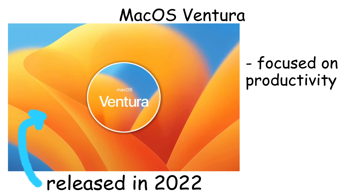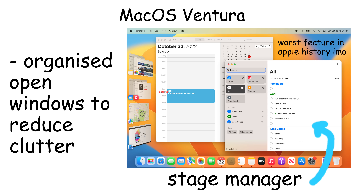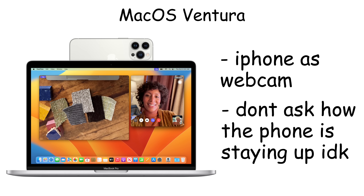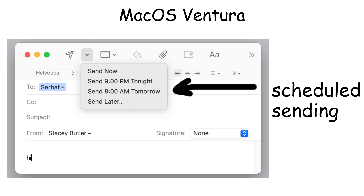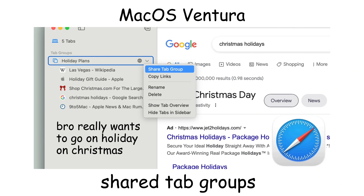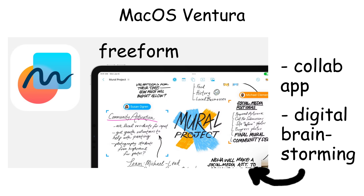macOS Ventura was released in 2022, focusing on productivity and collaboration improvements. It introduced Stage Manager, which automatically organized open windows to reduce clutter. Ventura improved Continuity with better Mac and iPhone integration, including using iPhones as webcams for video calls. Mail improvements included scheduled sending, undo send, and follow-up reminders. Safari gained shared tab groups for collaborative browsing. Ventura also introduced Freeform, a collaboration app for digital whiteboard brainstorming.